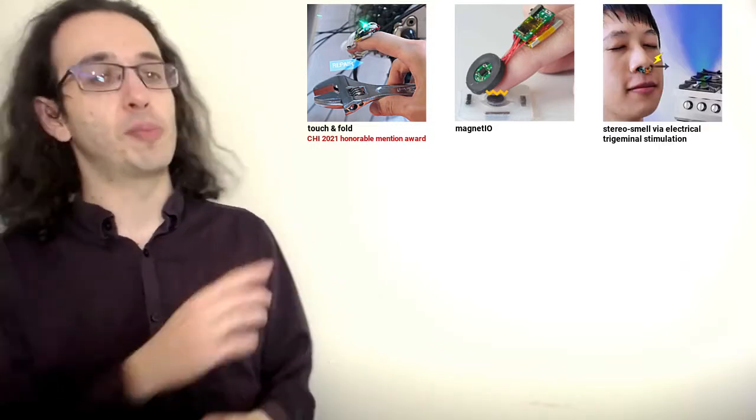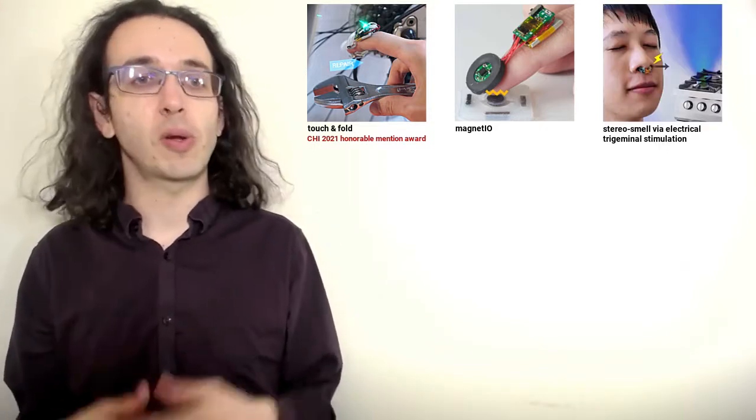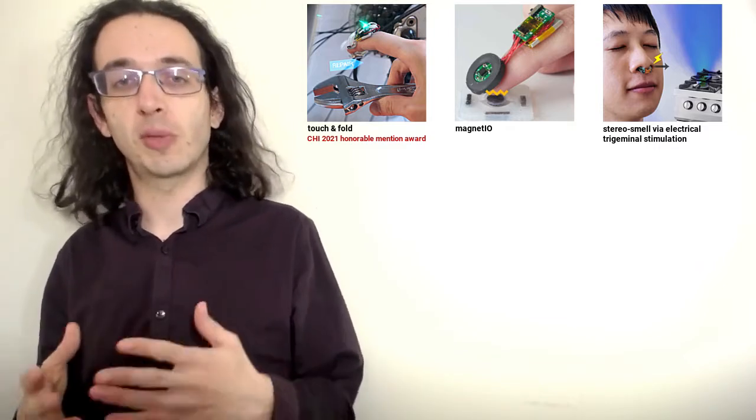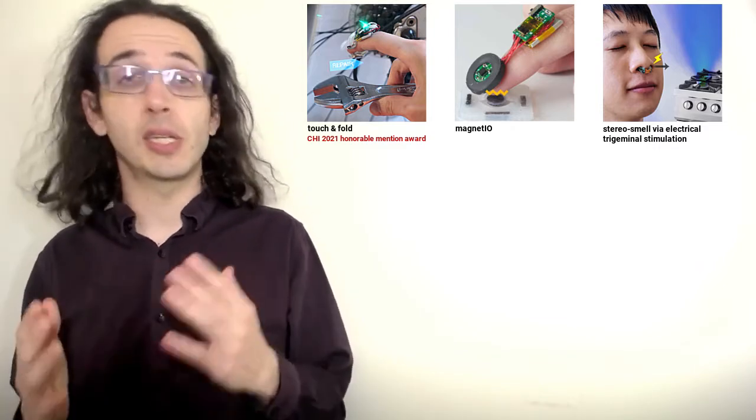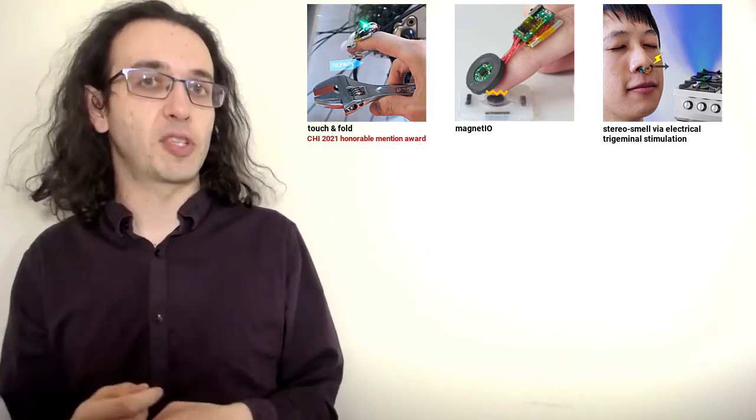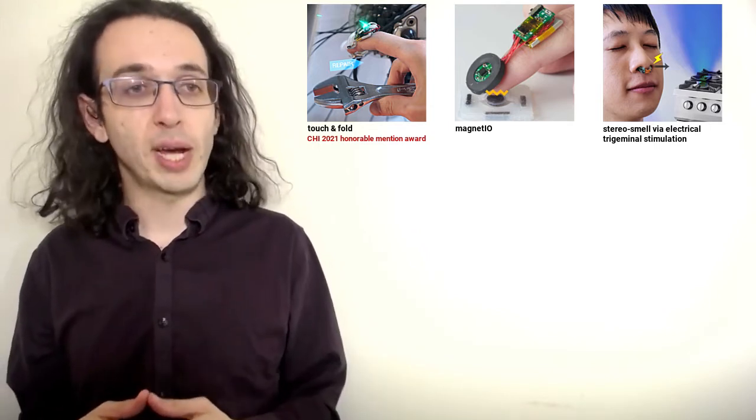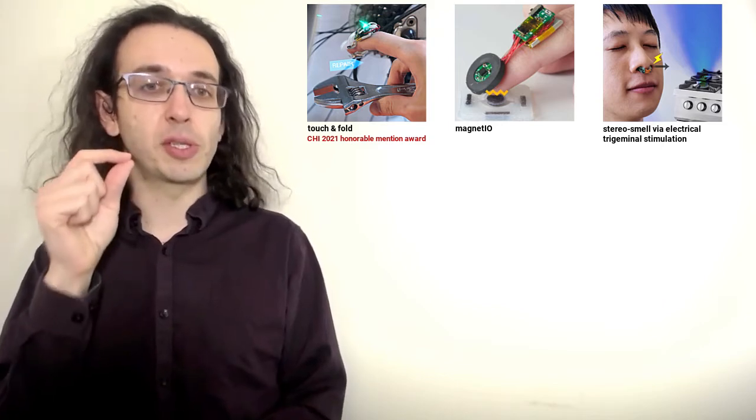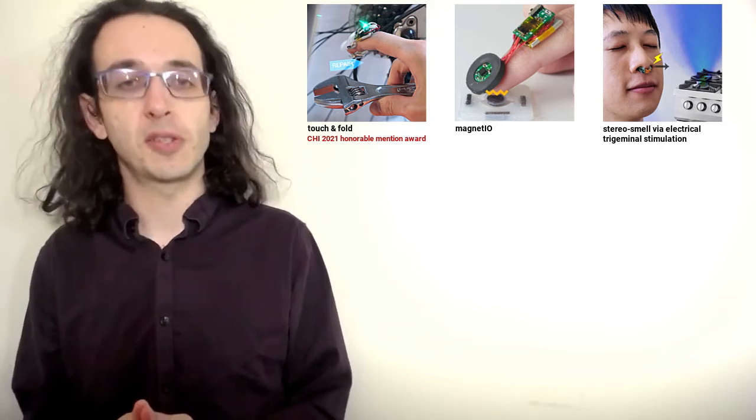The third paper, presented by my student Jazz Brooks, is called Stereo Smell Electrical Trigeminal Stimulation and demonstrates how we can achieve stereo smell if a smell is coming to the left or through the right by using a tiny electrical stimulator so small that it fits inside your nose.